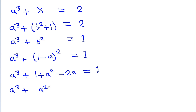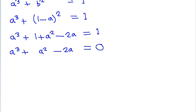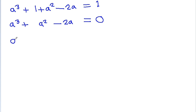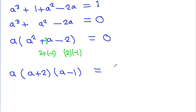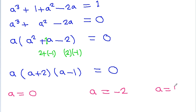Substituting b equals 1 minus a into a cube plus b squared equals 1 gives a cube plus (1 minus a) squared equals 1, which expands to a cube plus 1 plus a squared minus 2a equals 1, or a cube plus a squared minus 2a equals 0. Factoring: a times (a squared plus a minus 2) equals 0, which gives a times (a plus 2) times (a minus 1) equals 0. So a equals 0, a equals minus 2, or a equals 1.